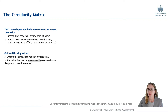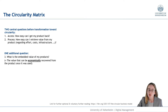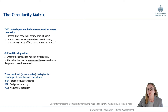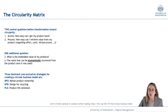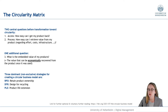Besides those two questions, there is one additional important question: what is the embedded value of my products? This refers to the value that can be economically recovered from the product once it was used and once we got it back. We also have to consider that there are three dominant, non-exclusive strategies for creating a circular business model: RPO (retaining product ownership), DFR (design for recycling), and PLE (product life extension).